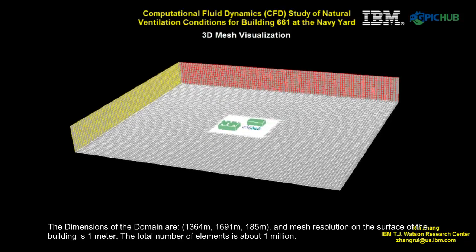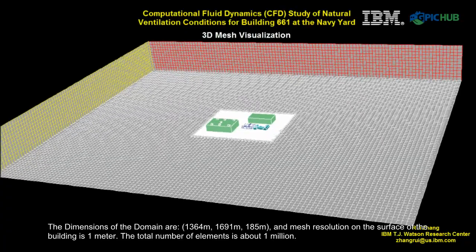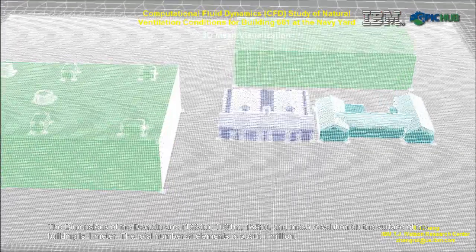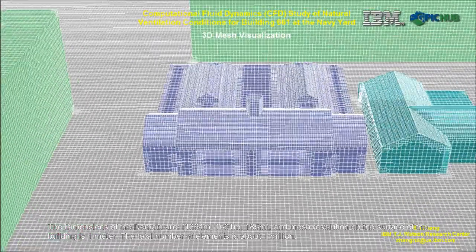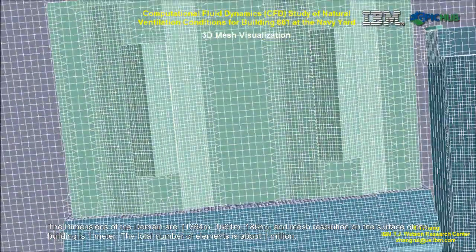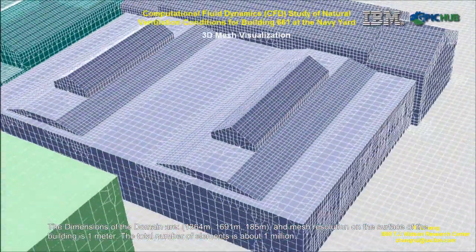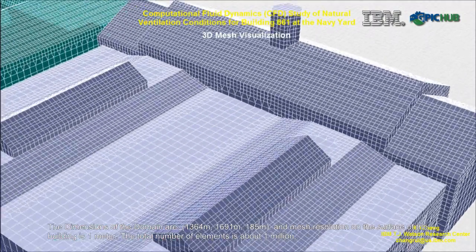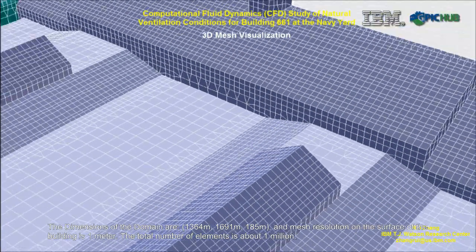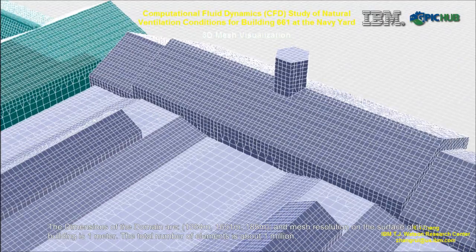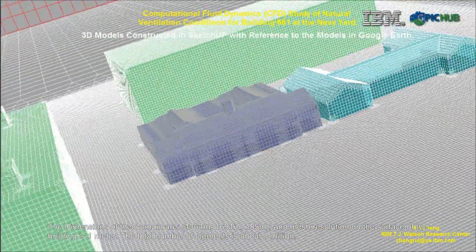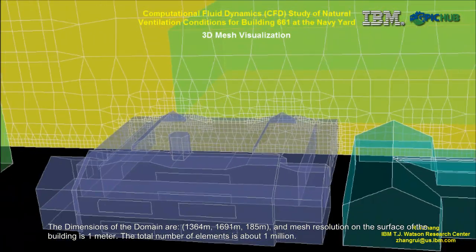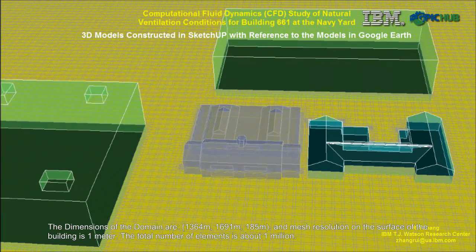What is being shown here is the three-dimensional animation of the generated mesh. The dimensions of the simulation domain are 1364 by 1691 by 185 meters, and the mesh resolution on the surface of the building is at 1 meter. The total number of elements in this set of mesh is about 1 million. The mesh generation is very challenging for such big domain and such detail at building level. In order to perform the simulation on a personal computer with acceptable computation time, such as within half an hour, the total number of elements should be limited. The CFD computation time is proportional to the number of elements in the mesh. The computation time for the current study is about 26 minutes on a personal computer.